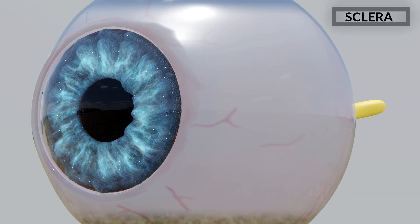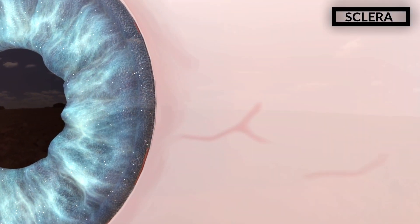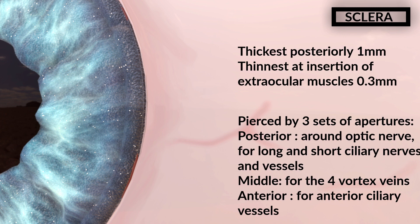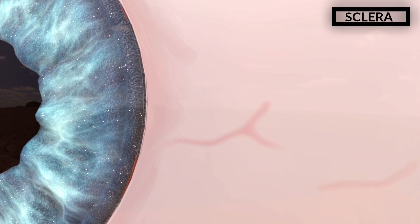Let us discuss a little bit about the sclera. It is part of the fibrous coat of the eyeball and forms its posterior five-sixth. It is covered by Tenon's capsule in its entirety and conjunctiva anteriorly. The conjunctiva is a transparent membrane with blood vessels running through it. The junction of cornea with sclera is called limbus. It is pierced by the following set of apertures as shown on screen.